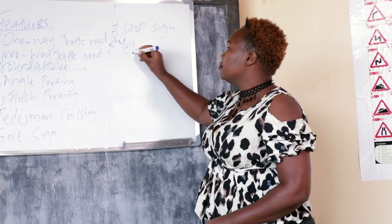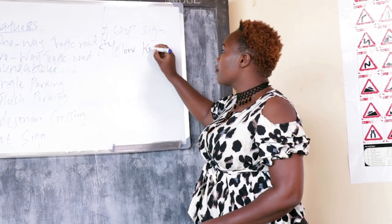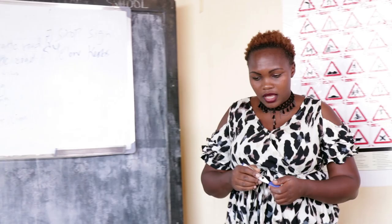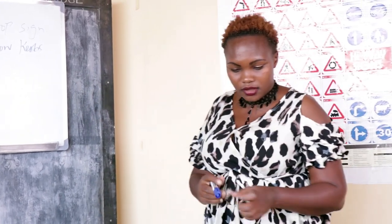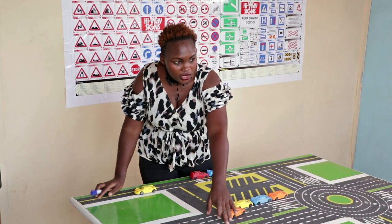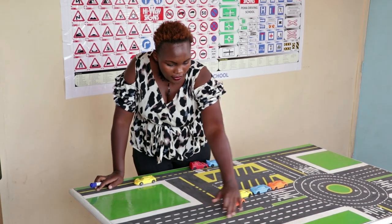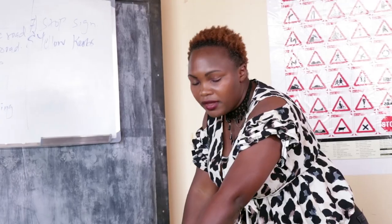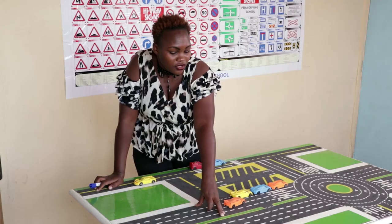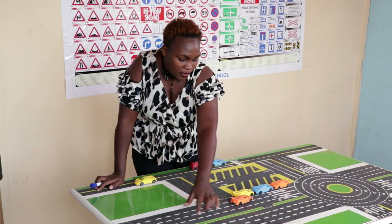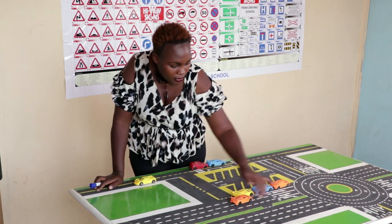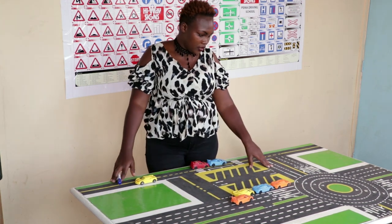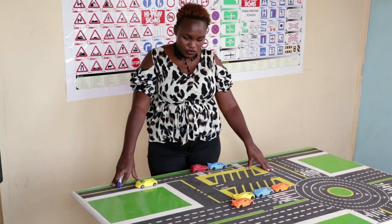Another feature that we have is yellow curbs. You will find them especially at the edges of main roads. Yellow curbs mean no overlapping, no parking, no waiting, no stopping. You are not supposed to park where there is a yellow curb drawn on the sides of the road — it is very risky to park there.